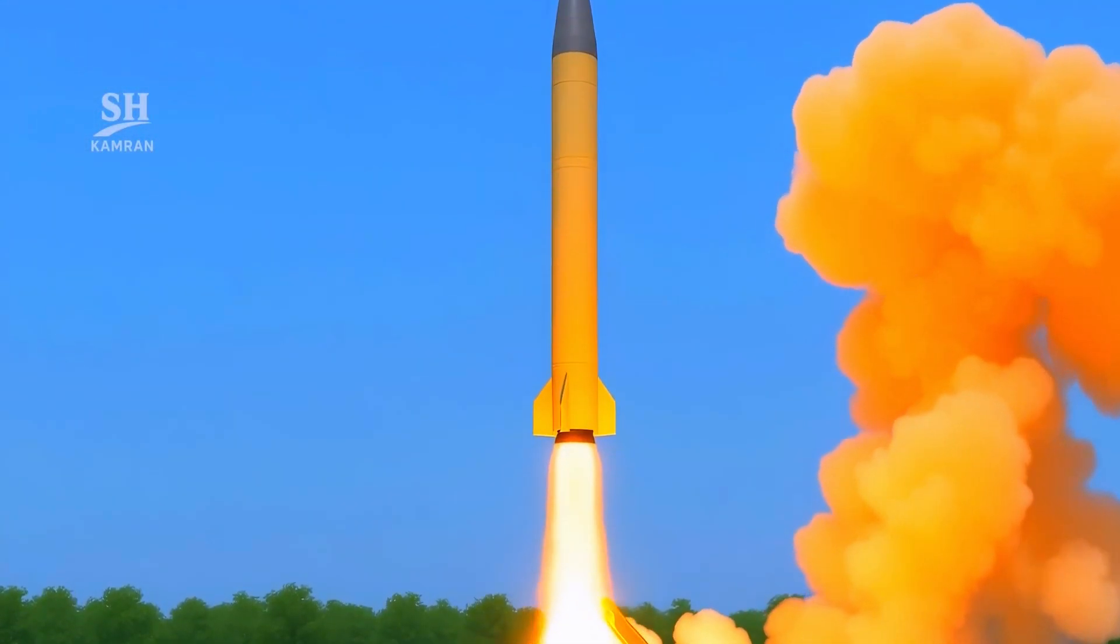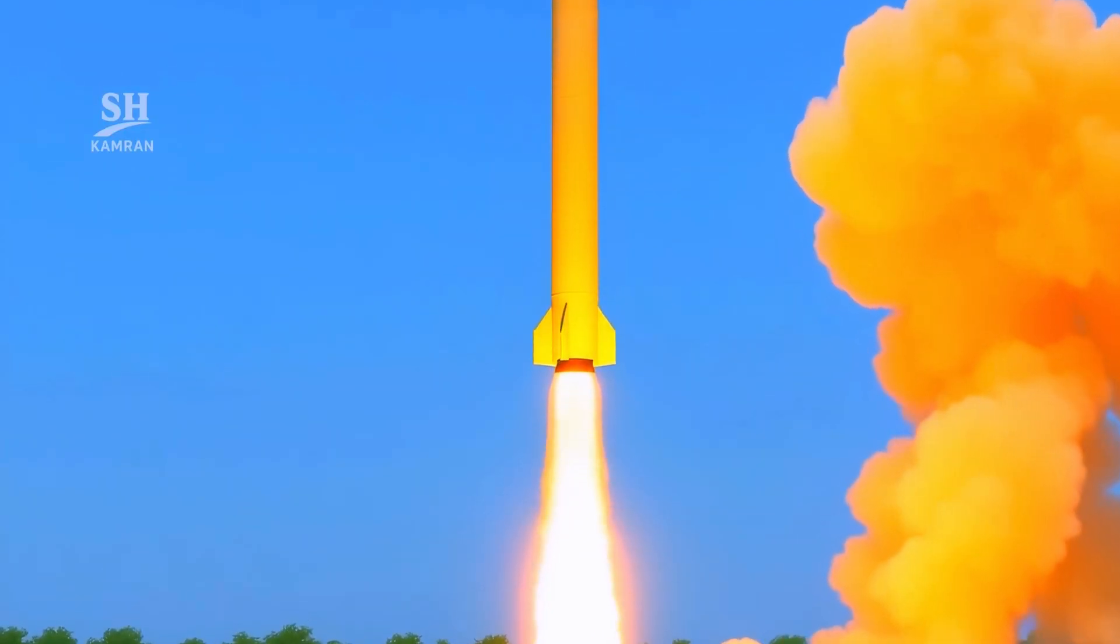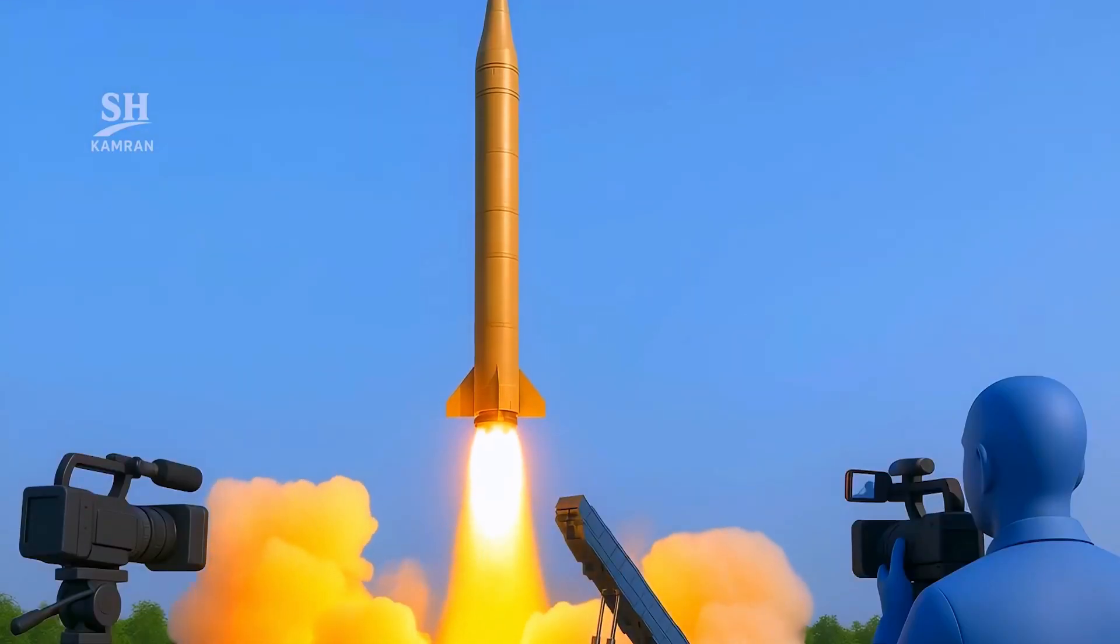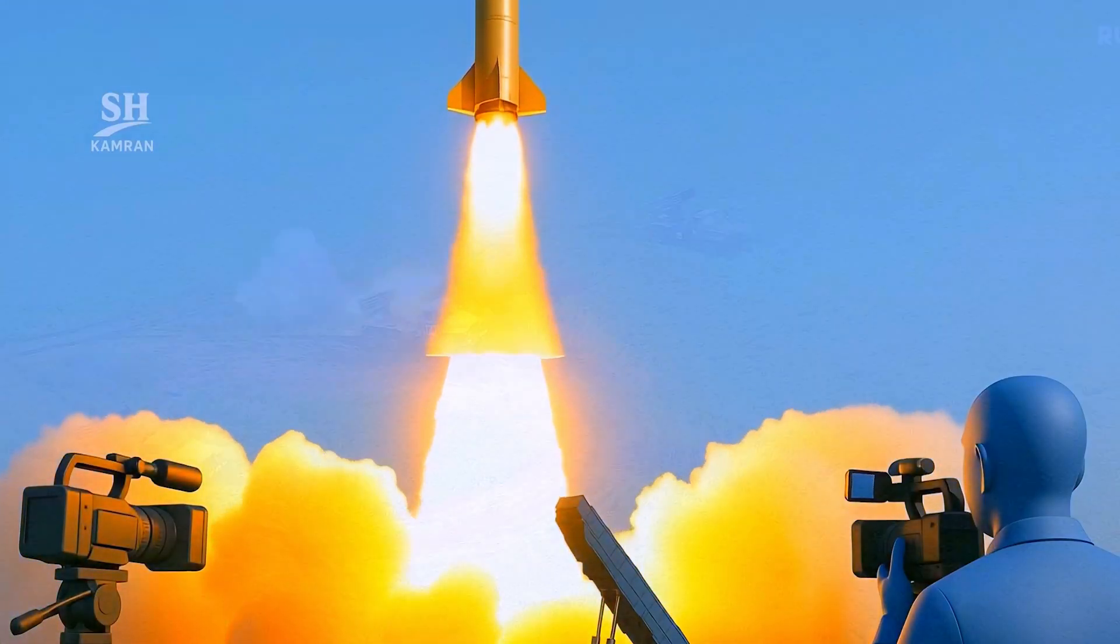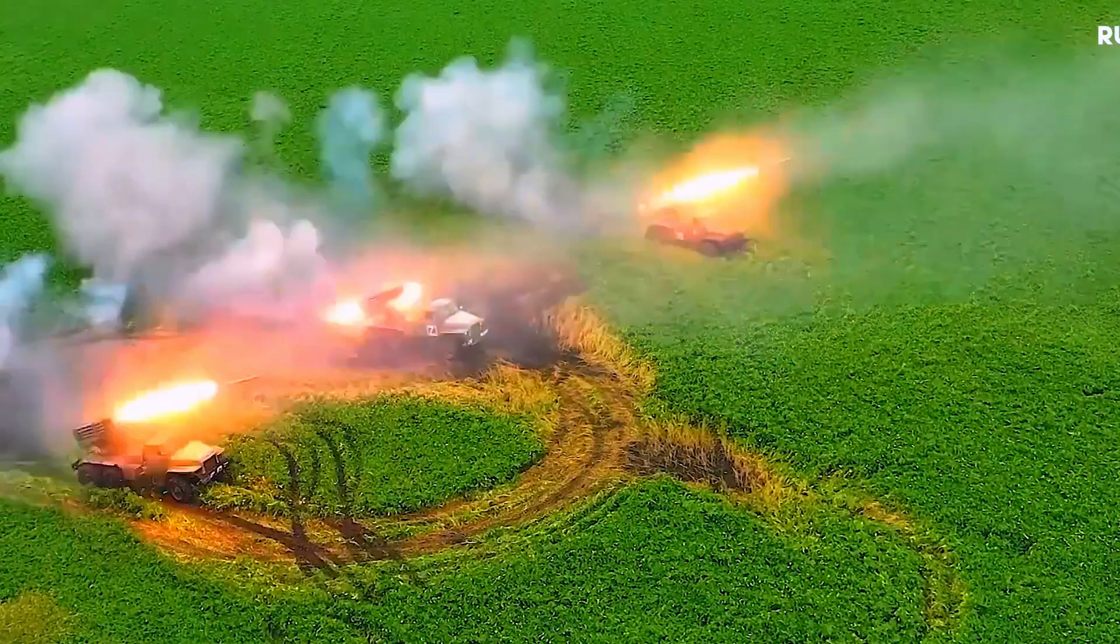This gas pushes backward and, as a result, the rocket or missile is pushed forward. This forward push is called thrust. And because of thrust, the rocket or missile moves in the opposite direction of the escaping gas.